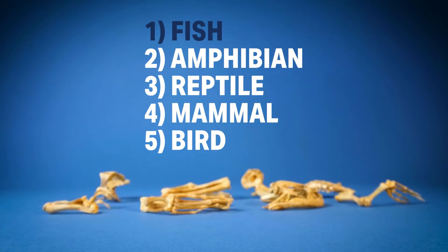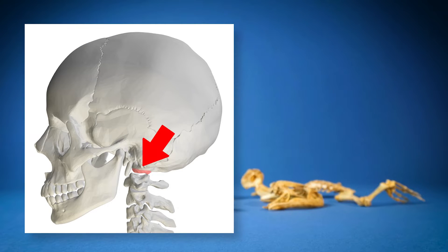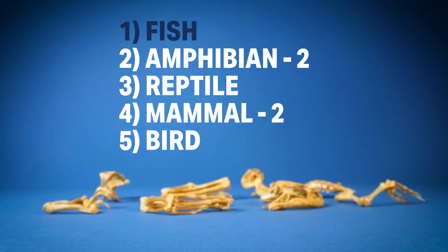When it comes to the rest of them, we're going to look at something called an occipital condyle. That will help us determine if it's an amphibian, a reptile, a bird, or a mammal. An occipital condyle is a rounded knob on the occipital bone that forms a joint with the first cervical vertebrae — it's the joint that connects your skull to your spine. Amphibians and mammals both have two occipital condyles, while reptiles and birds only have one.